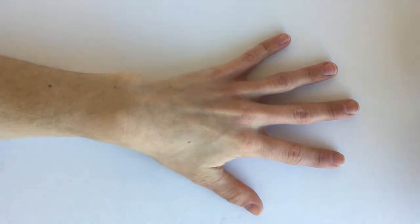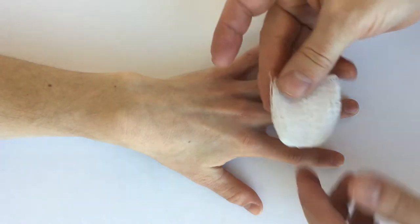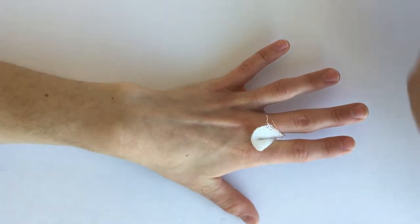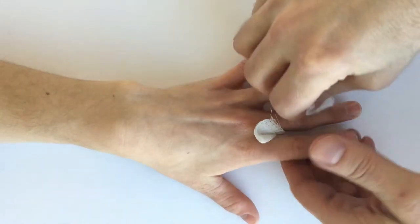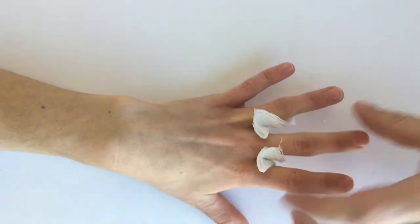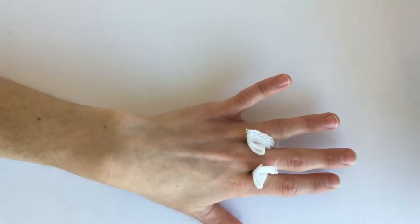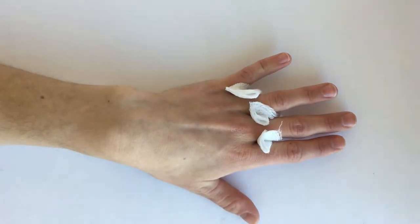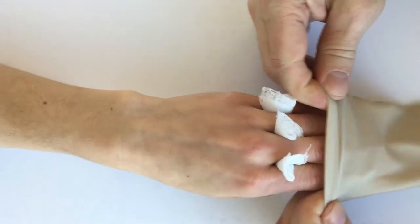One thing you can do is just take some gauze 2x2s and fold them over and put one in between each of the fingers, and then put the edema glove over that.